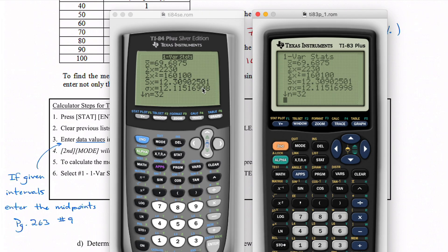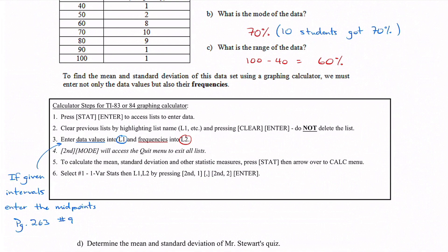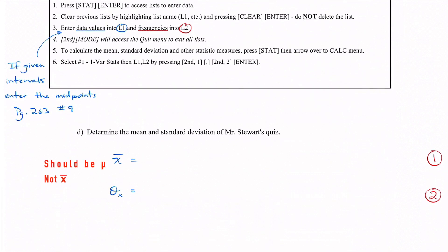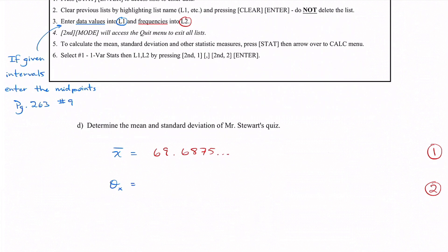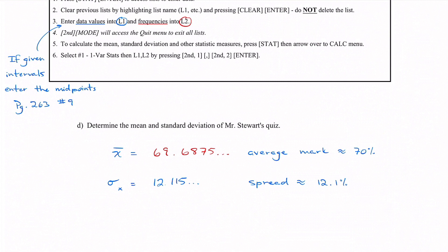Our mean from the calculator is 69.6875, so about 70%. For standard deviation, we need to use σx (sigma x) since we had the entire class — the full population, not a sample. The standard deviation was 12.115, so about 12.1%. The average quiz mark is about 70% with a spread of about 12.1%.